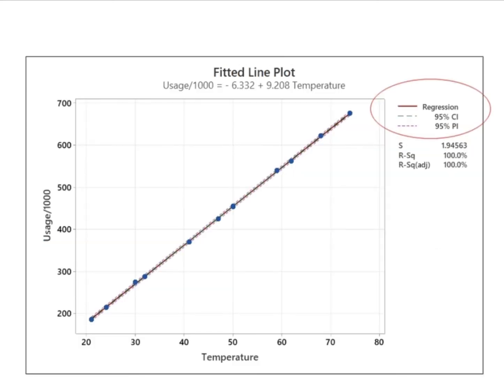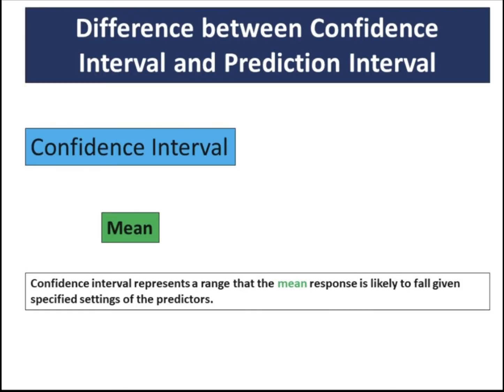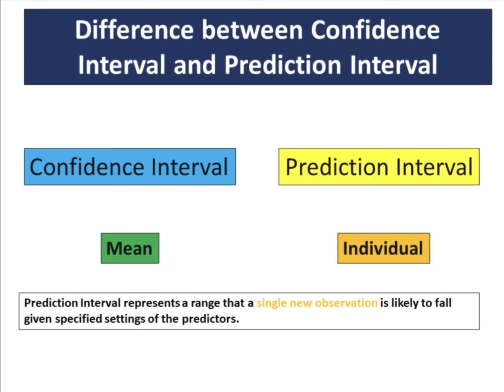The fitted line plot displays the response and predictor data. The plot includes the regression line, which represents the regression equation. You can also choose to display the 95% confidence and prediction intervals on the plot. The confidence interval for the fit provides a range of likely values for the mean response given the specified settings of the predictors. The prediction interval is a range that is likely to contain a single future response for a value of the predictor variable.